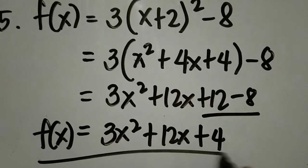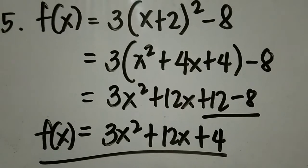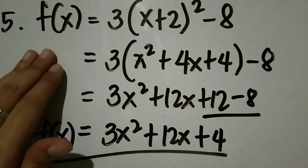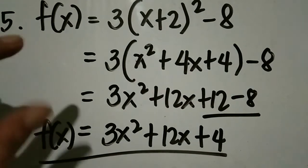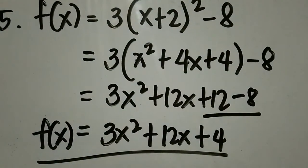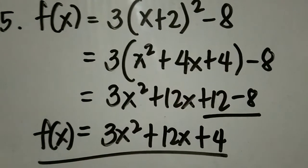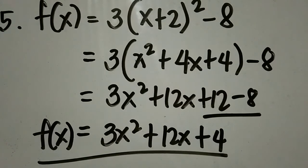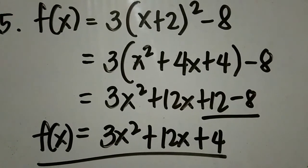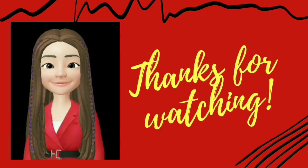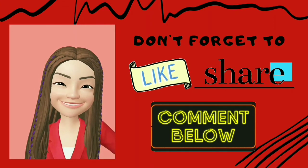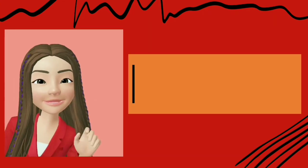So we have the answer: f(x) = 3x² + 12x + 4. Tatandaan ninyo lang: pag nag-change tayo ng vertex form into quadratic functions, i-square lang natin yung ating binomial, and then kung kailangan gumamit ng distributive property, mag-distributive property, and then combine similar terms. Ganoon lang kadali kung paano mag-transform ng vertex form into quadratic functions. Sana may natutunan kayo ngayon. Thank you for watching! Don't forget to like, share, comment, and subscribe to my channel. Until next time!